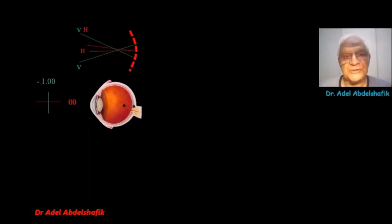While the vertical meridian is myope minus 1, it is strong by minus 1, so the vertical rays will come to a focus in front of the retina. So, horizontal on the retina, vertical in front of the retina.